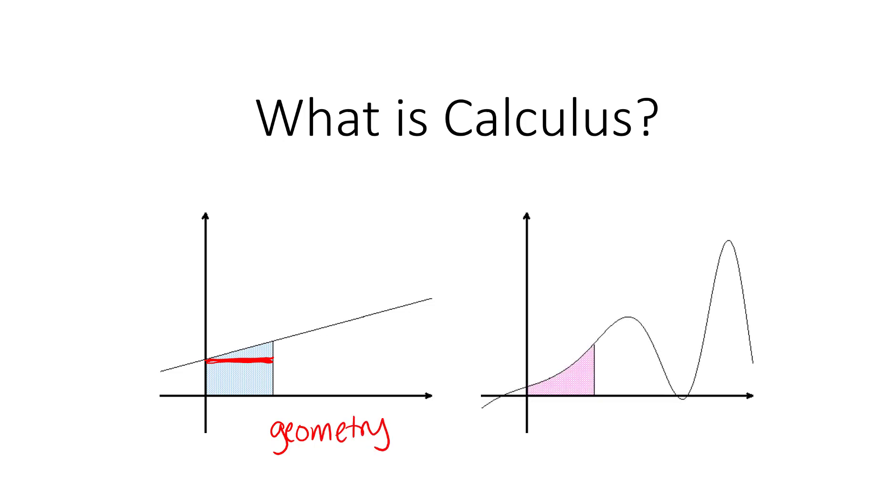With calculus, we might look at a more complicated region. So we have this same curve we were looking at before, and this time we have this region shaded where three sides of the region are straight lines, so those might be easy enough to think about, but the other side of this region is this curve.